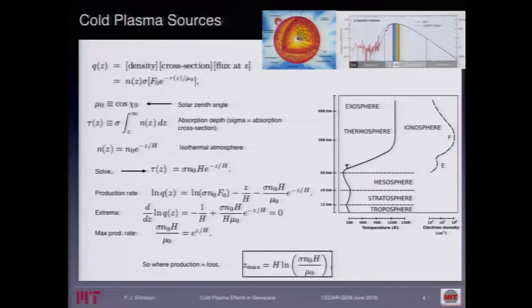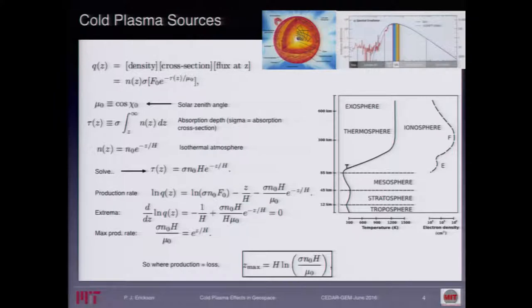When Chapman was doing this, there were some revolutionary insights. You have some production function — basically the density of the atmosphere you're hitting with these UV photons, their cross-section, how much energy they're intercepting, and the flux at some particular altitude. The ionosphere is not completely optically thin or EUV-thin. So as you get down, you get depth, and you have to worry about how this production function falls off. If you put in solar zenith angle, the absorption depth, and an isothermal atmosphere, you can solve for the maximum production rate — where production equals loss.